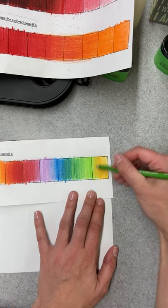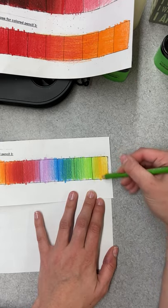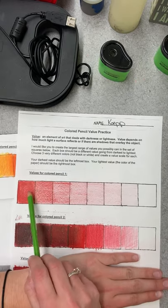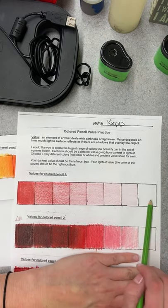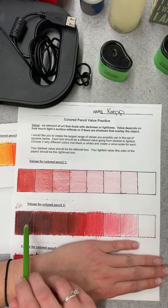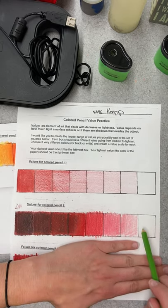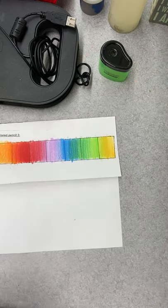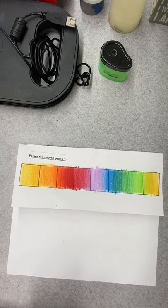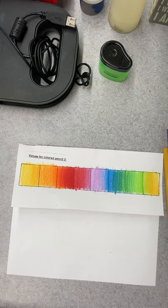And that is the worksheet. So you should have, when you're done, you should have one color just using pressure. The color that you used up top should also use then just black and white to make values. And then the very last one, we are gonna do a rainbow color wheel, all blended together. So if you have any questions please let me know, and I will talk to you guys soon. Bye bye.